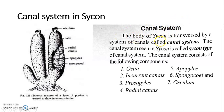Let's move to the canal system. The body of Sycon is traversed by a system of canals called the canal system. The canal system seen in Sycon is called the Sycon type. There are three types of canal systems: Ascon, Sycon, and Leucon type. Here, we will focus only on the Sycon type of canal system. The canal system consists of the following components.